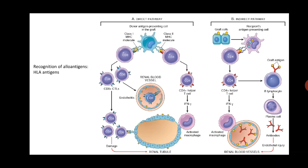In the direct pathway, donor antigen presenting cells present the antigen to the recipient's T cells. Both CD4 positive and CD8 positive T cells are activated, and they attack the blood vessels and the tubular epithelial cells of the grafted kidney.